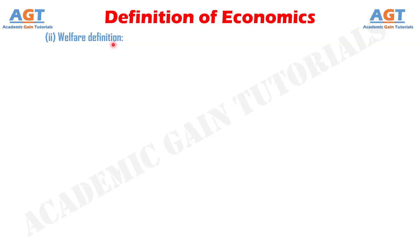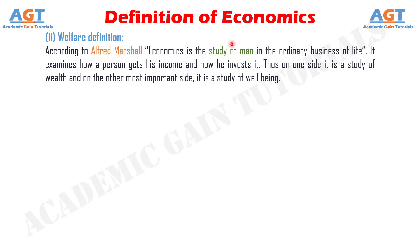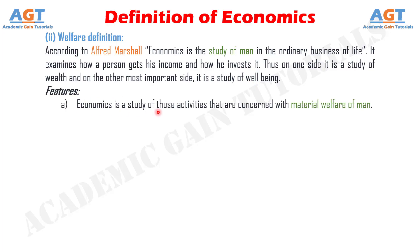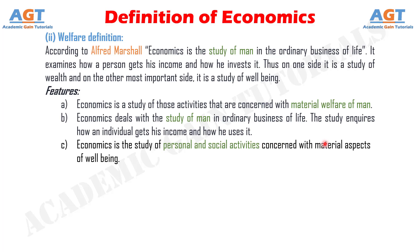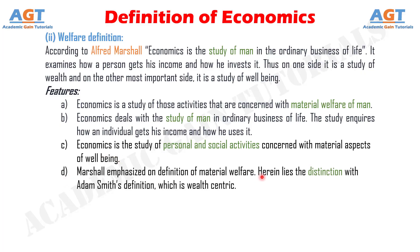Number 2: Welfare Definition of Economics. According to Alfred Marshall, economics is the study of man in the ordinary business of life. It examines how a person gets his income and how he invests it. Thus on one side it is a study of wealth, and on the other, most important side, it is a study of well-being. Features include: economics is a study of activities concerned with material welfare of man; it deals with the study of man in ordinary business of life; it inquires how an individual gets his income and how he uses it; and it covers personal and social activities concerned with material aspects of well-being. Marshall emphasized material welfare, which is the key distinction from Adam Smith's wealth-centric definition.